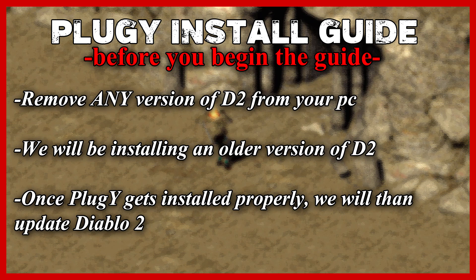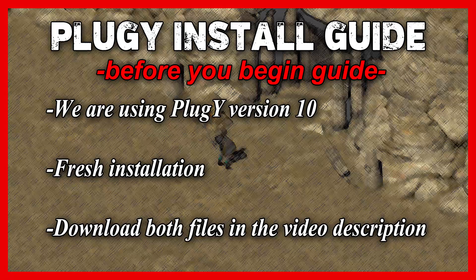After we have an older version of the game installed on our computer, we will eventually update our Diablo 2 client later on through the in-game patcher. So basically all we are doing is downloading and installing a downgraded version of the game just so we can get our mod installed properly. In today's video, I'm going to explain how to install the most common version of Plug-e, which is version 10. I'm going to walk you through a fresh installation instead of attempting to show you how to install a mod with a mod already installed on my computer, which is a bit counterintuitive.